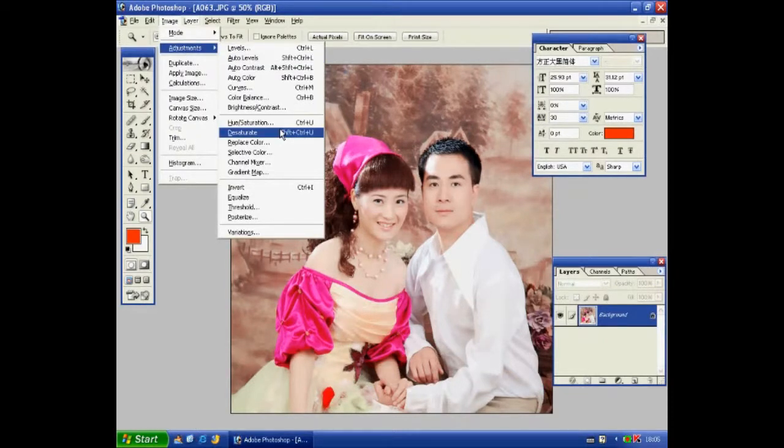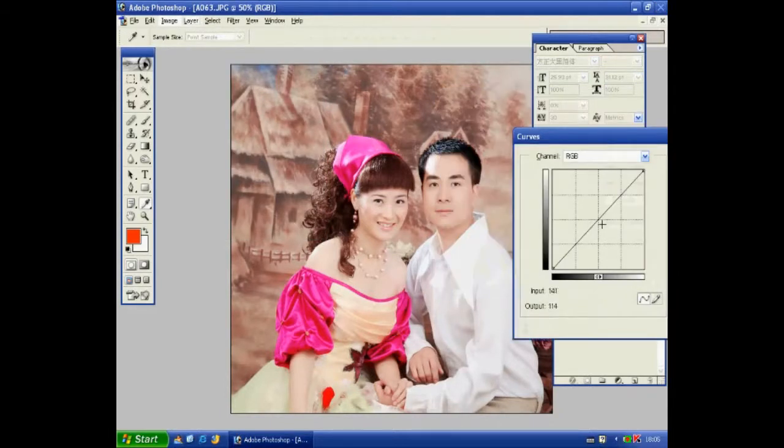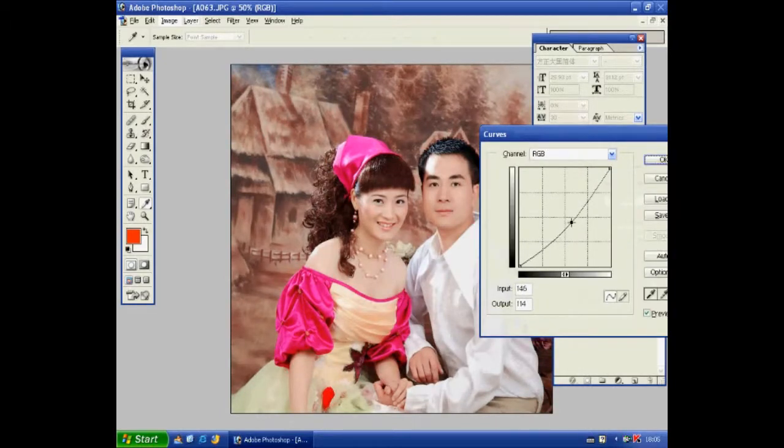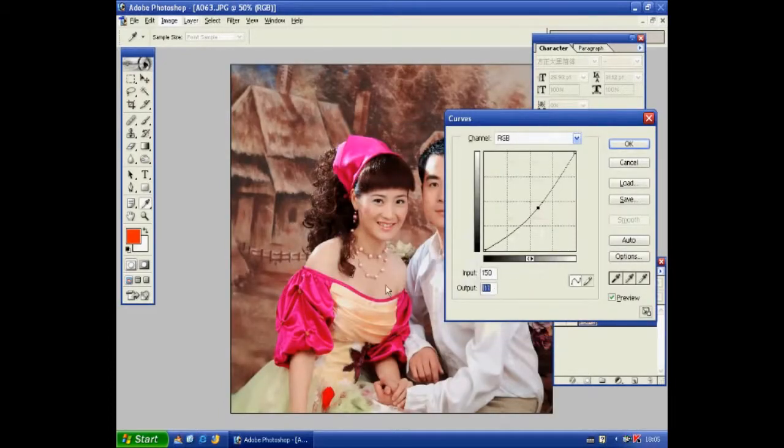Choose Image in the drop-down menu. Choose Adjustments in the drop-down menu. Choose Brightness and Contrast curve of color photographs to make adjustments. We usually will make the color darker.